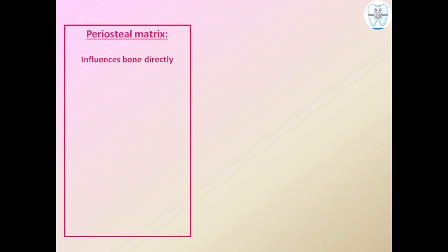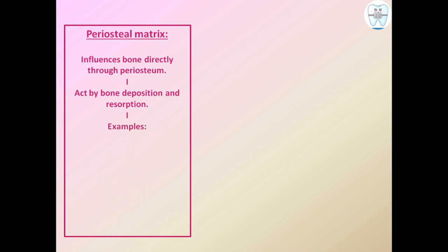The periosteal matrix influences bone directly through the periosteum by bone deposition and resorption. Examples of periosteal matrix include the temporalis muscle, teeth, blood vessels, nerves, and glands.